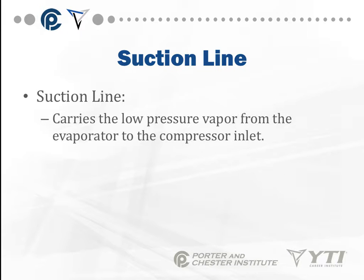The suction line takes the low-pressure vapor — 100% gas coming out of the evaporator — and returns it to the compressor. Think about the full circle: the compressor increases the pressure of vapor refrigerant; it goes to the condenser where air blown across removes heat, causing the refrigerant to change from vapor to liquid; the liquid line carries it to the metering device, which drops pressure and causes boiling in the evaporator; and then the vapor returns via the suction line to start the whole cycle over.